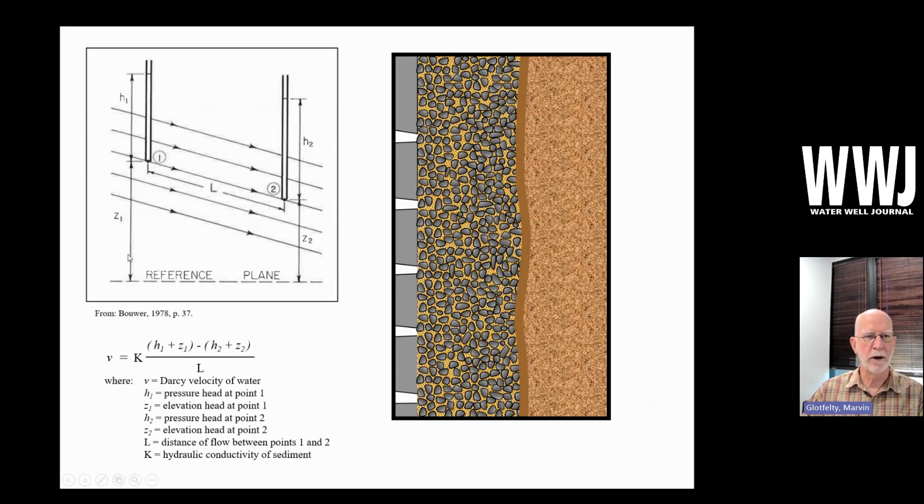All this in the numerator here basically is the gradient. So H1 and Z1 are one pressure head. And then at the lower end, we have Z2 and H2 over here. So all this is just the gradient. And that's divided by L. And L is the pathway along which the water is moving.